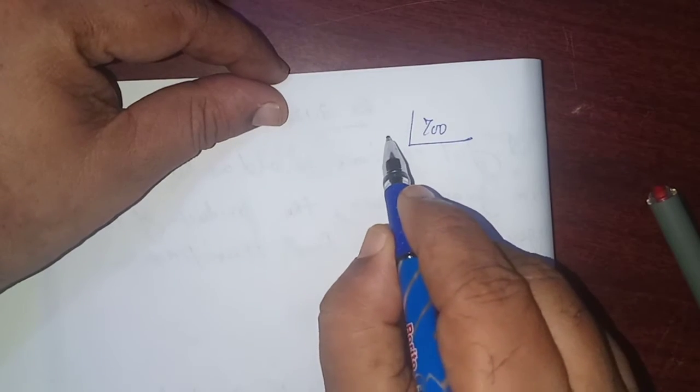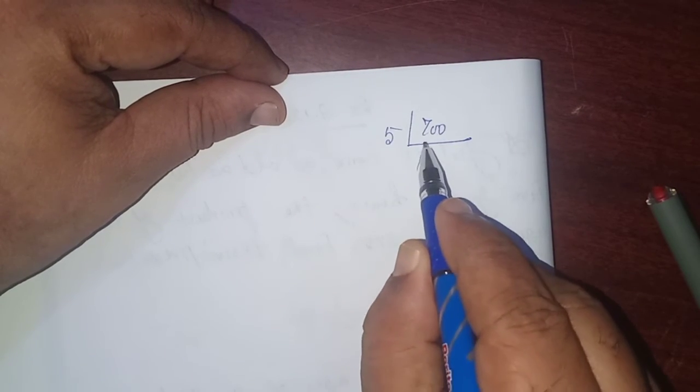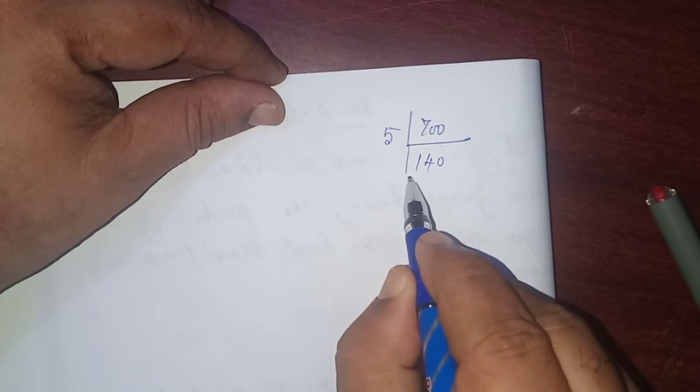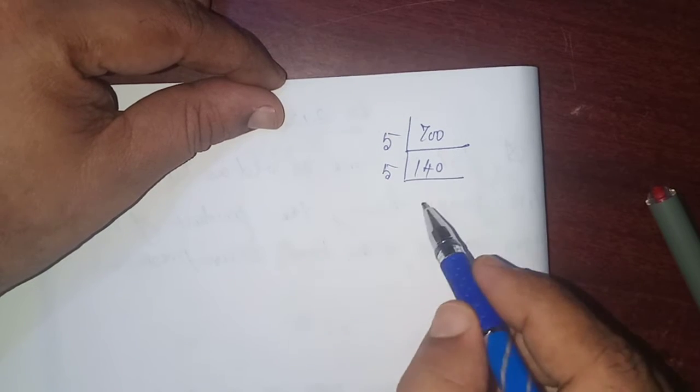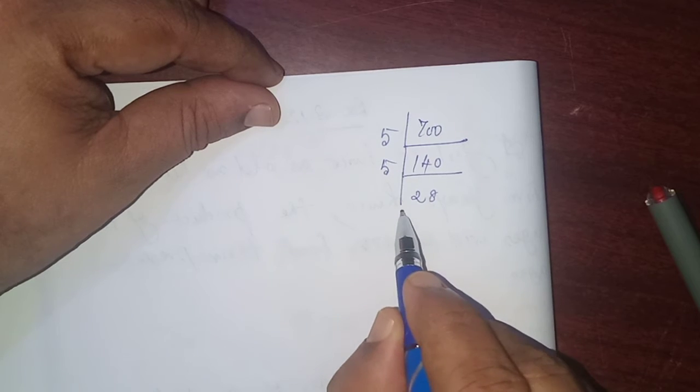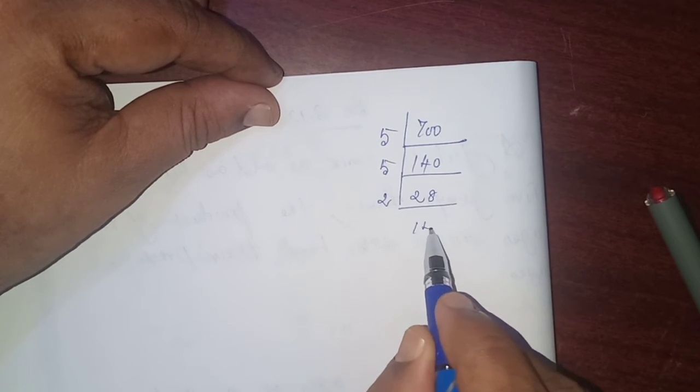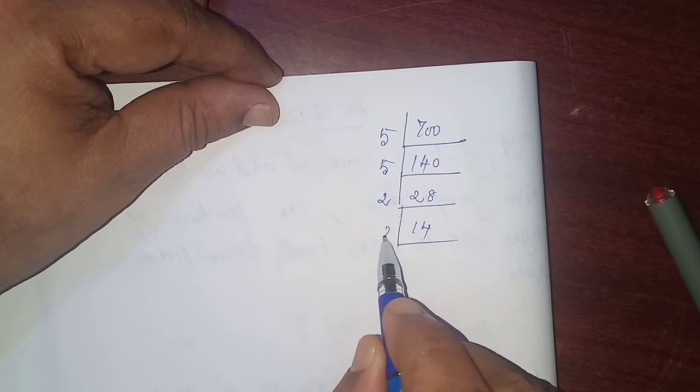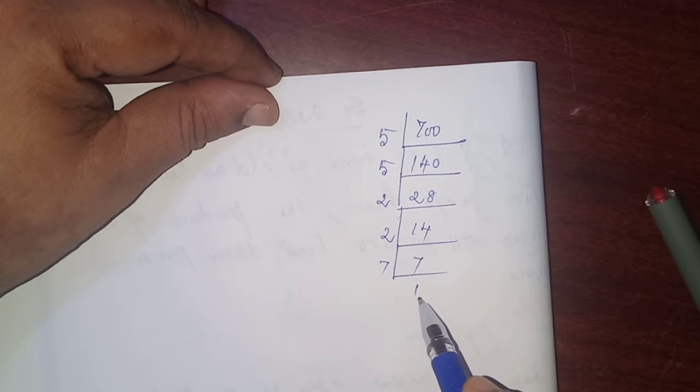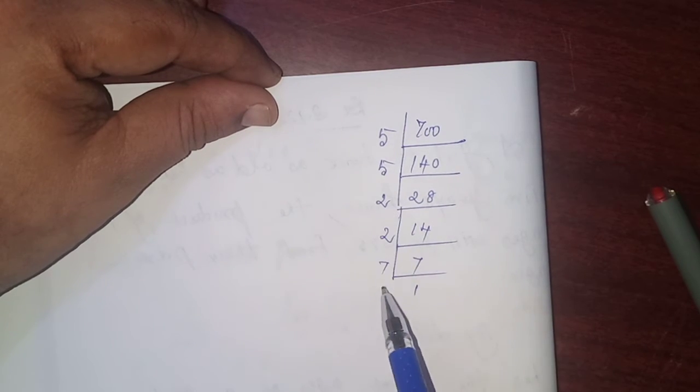Take 700. Keep on dividing by prime numbers. I take 5. 5 ones are 5, balance 20. 5 fours are 20. 2. Again, divide by 5. 5 twos are 10. 5 eights are 40. Divide by 2. 14. And divide by 2. 7. Divide by 7. 1. Until you get 1, keep dividing. Each number must be prime.